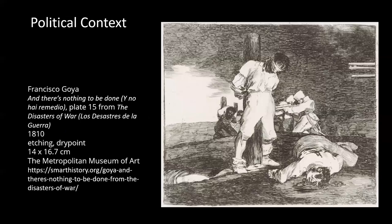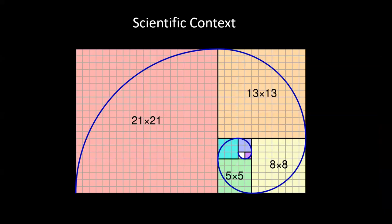Next we have the political context. This is Goya's documentation of the horrors of the war between France and Spain when Napoleon invaded. These works weren't published until well after Goya's death, probably because they were graphic and in one sense ambiguous — he doesn't really take sides, except to say that civilians shouldn't be subject to slaughter in wartime. He's not specifically favoring one side; he's just showing the horrors of war.